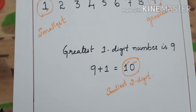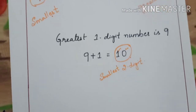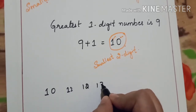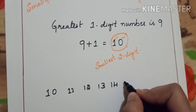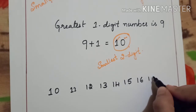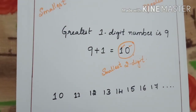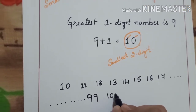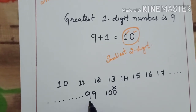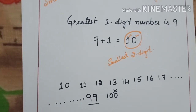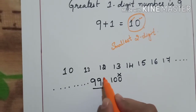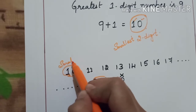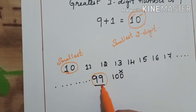Shall we find out which is the greatest 2-digit number? 10, 11, 12, 13 — these are all 2-digit numbers. 15, 16, 17 and so on. If I write 99, the next number is 100, but that is not a 2-digit number. So 99 is the greatest 2-digit number. Smallest 2-digit number is 10 and the greatest 2-digit number is 99.